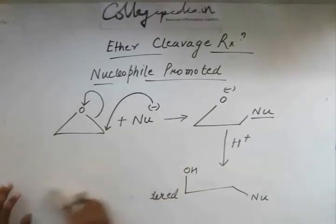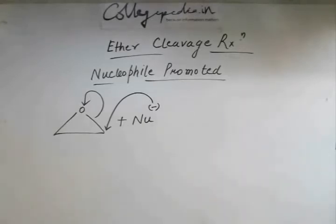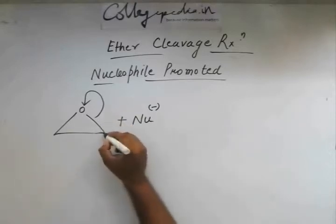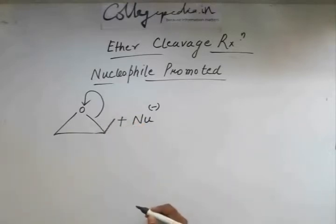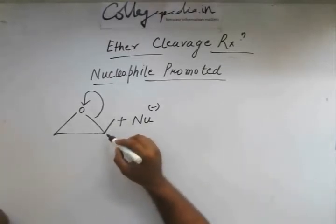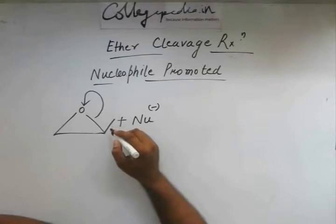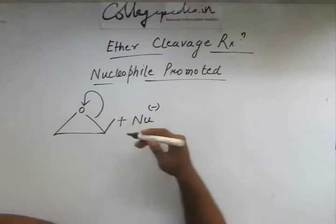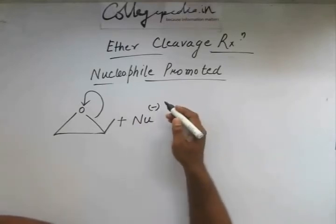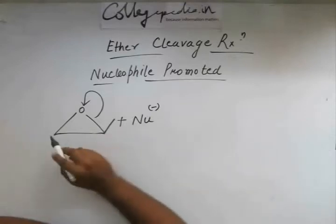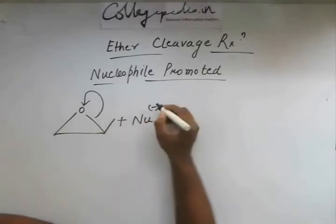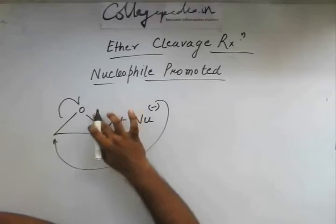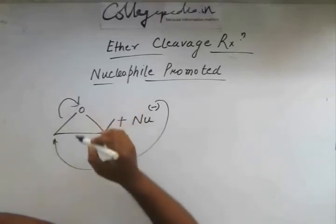Now we will see another reaction of the same kind where the two carbons have different groups attached to them. In this case, one carbon atom has one hydrogen and one methyl group attached to it. Since this is an SN2 reaction, the nucleophile will attack the carbon that is least sterically hindered. Comparing the two carbons, the one without the methyl group is least sterically hindered, so the nucleophile attacks there and this bond breaks.